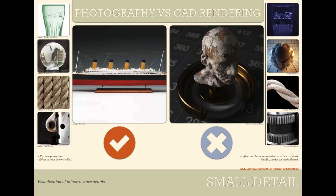Next category is small detail. With photography and a real world product, you need to put those small details in — but for a lot of products and especially the materials they're made of, you don't need to put those details in; they are already there. However, in CAD rendering all of those little details need to be put in, and sometimes they're easy to forget or difficult to do in the first place. So photography wins this category.